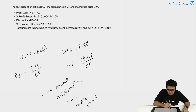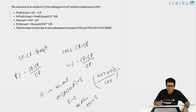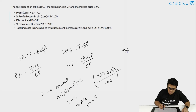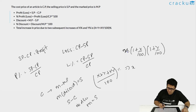The total increase in price due to two subsequent increases of x percent and y percent is x plus y plus (x times y) divided by 100 percent. This comes from multiplying (1 + x/100) by (1 + y/100) and expanding, which gives the cost price multiplied by (1 + x + y + xy/100). These are the basic formulas.